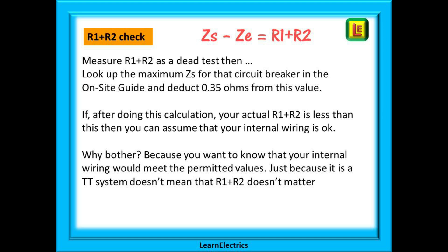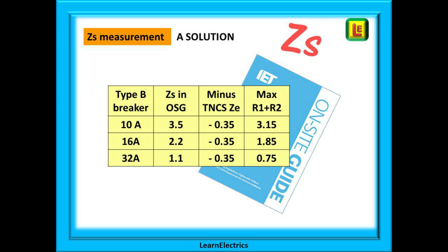Why 0.35 ohms? That's because that number is the maximum ZE for a TN-C-S system, and that's the only thing we have right now as a reference for a normal ZE. If your actual measured R1 plus R2 is less than this calculated value (ZS minus 0.35), then you can assume that your internal wiring is okay. We bother with this because you want to know that your internal wiring would meet the permitted values — just because it is a TT system doesn't mean R1 plus R2 doesn't matter. It matters very much for short circuit protection, for overload and for voltage drop. So don't ignore it — get it right, be professional.